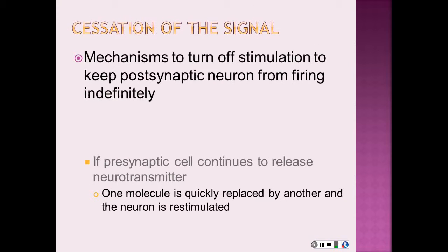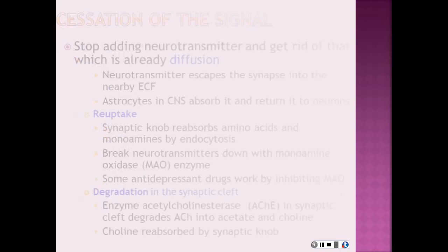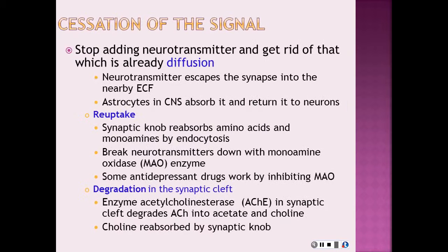Cessation of signals occurs when the neurotransmitter stops being released and when the neurotransmitter already present in the synaptic cleft is removed. Cessation of action potentials in the presynaptic nerve fiber stops the release of the neurotransmitter. The removal of neurotransmitter from the synaptic cleft occurs in three ways: diffusion, reuptake, and degradation.